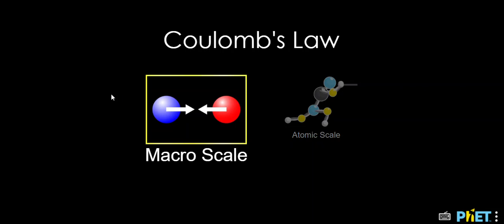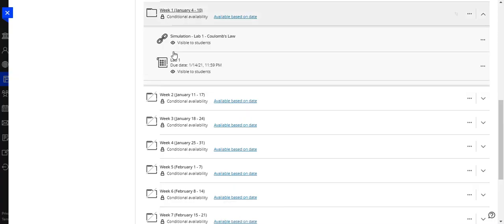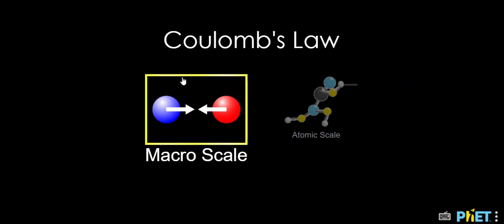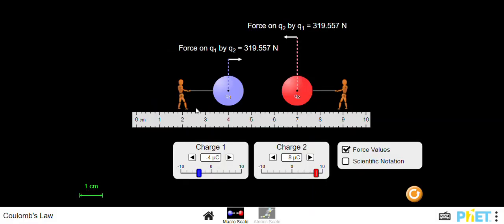So basically when you open the simulation, just make a click here on this link, let's say simulation lab one Coulomb's Law, and you just open the simulation. Then you have these two options. We're going to be working in the macro scale so we're gonna just click on this here.